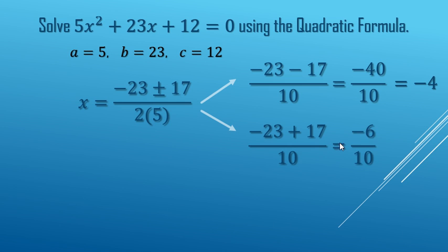Negative 23 plus 17 is negative 6 over 10, which reduces to negative 3 fifths. So our solutions for x are going to be negative 4 or negative 3 fifths.